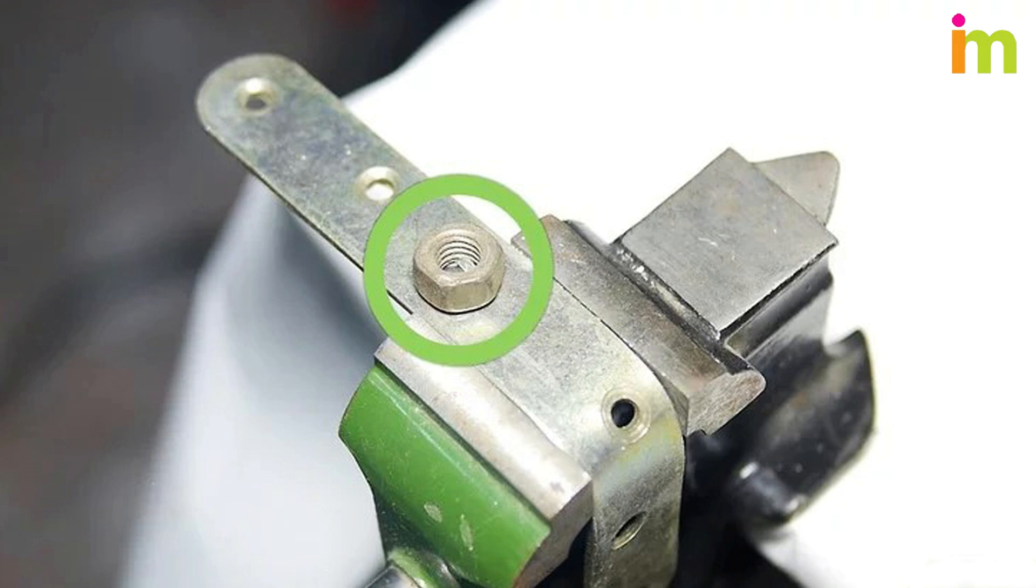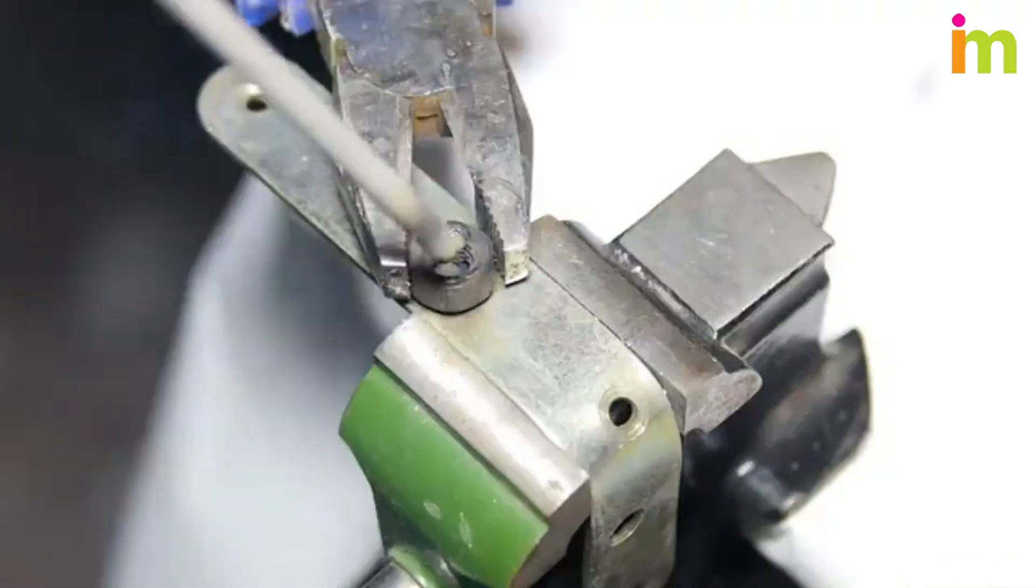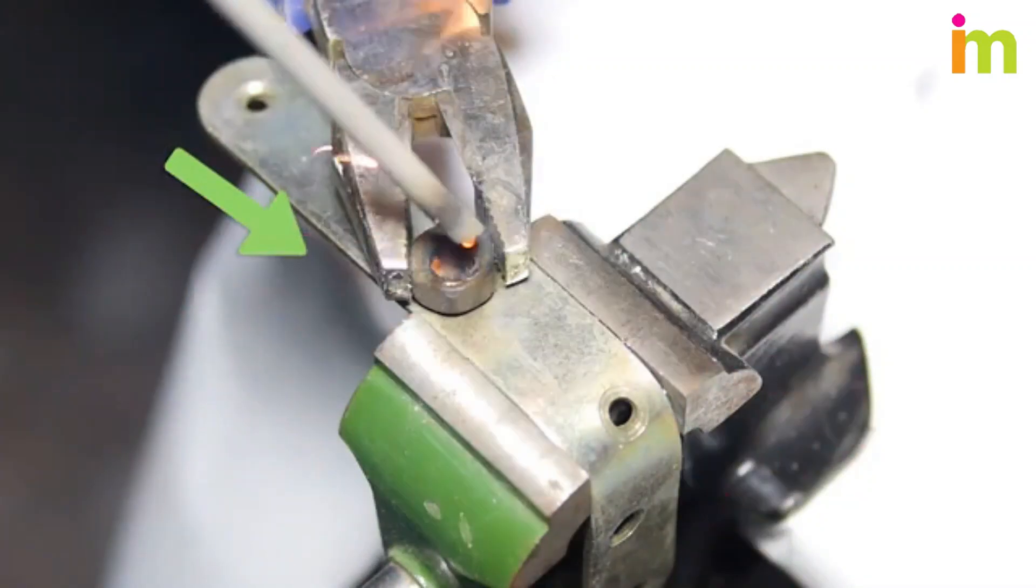With any threading the bolt still has exposed, tighten a hex nut onto it. Weld the bolt to the nut.